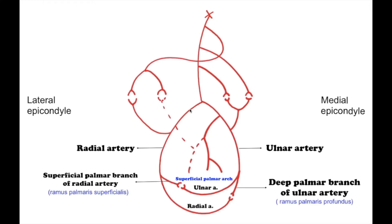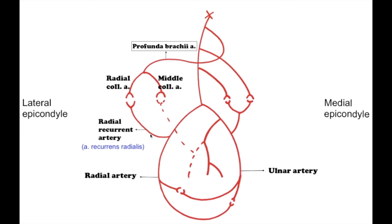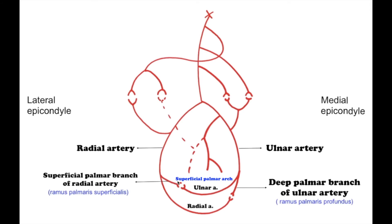The next branch is the deep palmar branch, ramus palmaris profundus, which together with the radial artery participates in forming the deep palmar arch. The next terminal branch of the brachial artery is the radial artery. The branches of the radial artery are the radial recurrent artery, arteria recurrens radialis, which passes in the proximal direction toward the anterior surface of the lateral epicondyle, where it anastomoses with the radial collateral artery from the deep brachial artery. The superficial palmar branch, ramus palmaris superficialis, anastomoses with the end of the ulnar artery and participates in the formation of the superficial palmar arch.